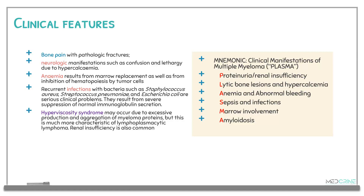Patients can also develop hyperviscosity syndrome, resulting from excessive production and aggregation of myeloma proteins, though it is more characteristic of lymphoplasmacytic lymphoma. Some patients present with renal failure or renal insufficiency. A useful mnemonic to remember the clinical manifestations is PLASMA: P for proteinuria or renal insufficiency, L for lytic bone lesions and hypercalcemia, A for anemia and abnormal bleeding, S for sepsis and infections, M for bone marrow involvement, and A for amyloidosis.